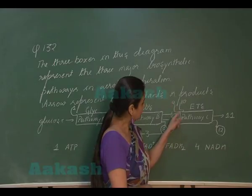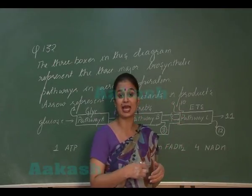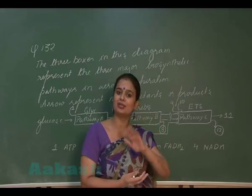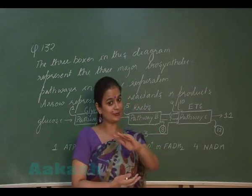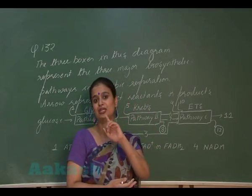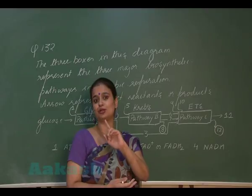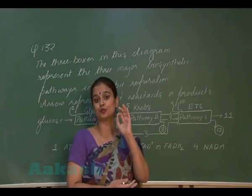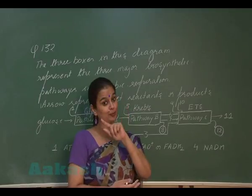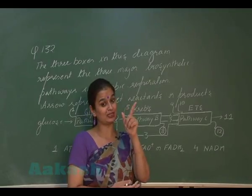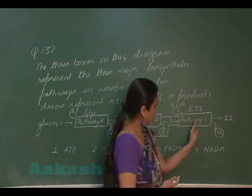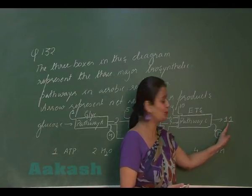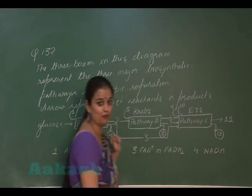The reactants entering the ETS include protons picked up from the matrix. For the formation of ATP through oxidative phosphorylation, there is a requirement of a proton gradient, and the protons are picked up from the matrix. After that, there is formation of metabolic water — position 11 represents water.